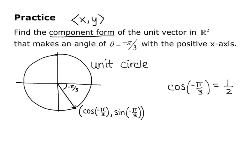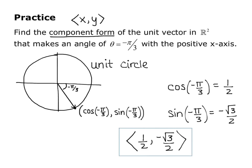Cosine of negative pi over 3 is 1/2. Sine of negative pi over 3 is negative square root of 3 over 2. Because we are on the unit circle, the length of that vector is already 1. So the unit vector that makes an angle of negative pi over 3 with the positive x-axis is angle bracket 1/2, negative square root of 3 over 2.